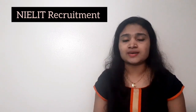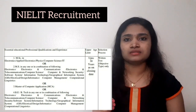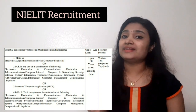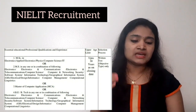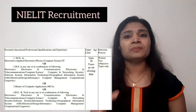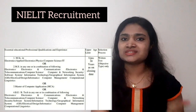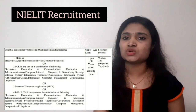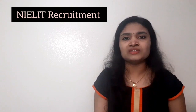For Scientific Assistant A, candidates should have M.Sc., M.S., MCA, B.E., or B.Tech in branches like Electronics, Electronics and Communication Engineering, Electronics and Telecommunication Engineering, Computer Science, Computer and Networking, Information Technology, or Informatics. This organization is mainly looking for people from the electronics and computer science/IT branches.